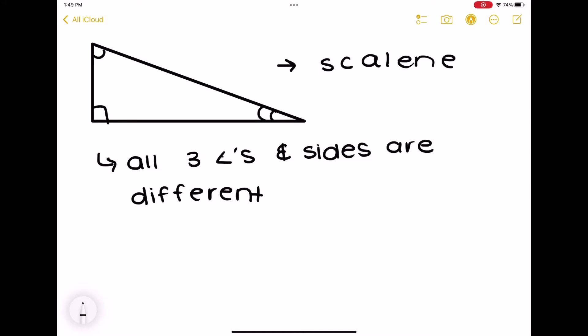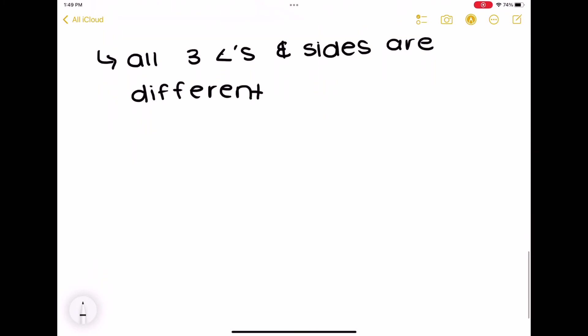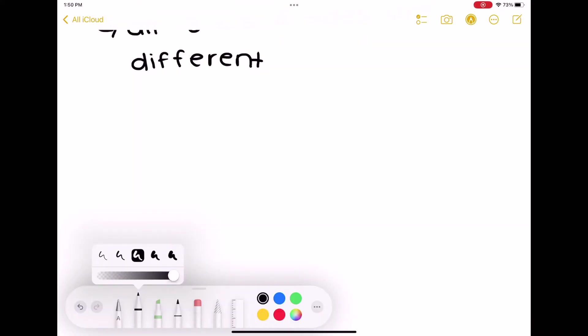And in this case, it is also called a right triangle because of that right angle. So like obtuse, as long as there's one right angle, it is classified as a right triangle.